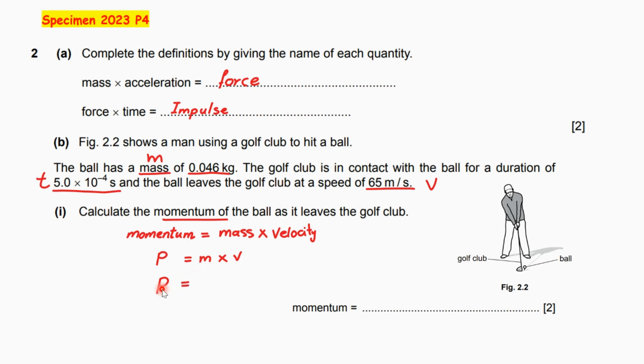P equals M, 0.046 times 65 for the velocity. It gives us finally 3.0, and the unit is kilogram meter per second, which is the unit of momentum. So you get two marks, one mark for the final correct answer with the unit and the substitution.